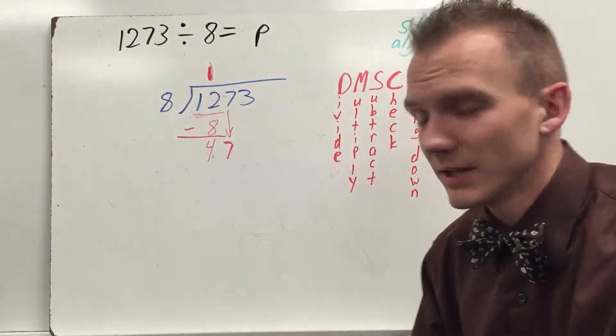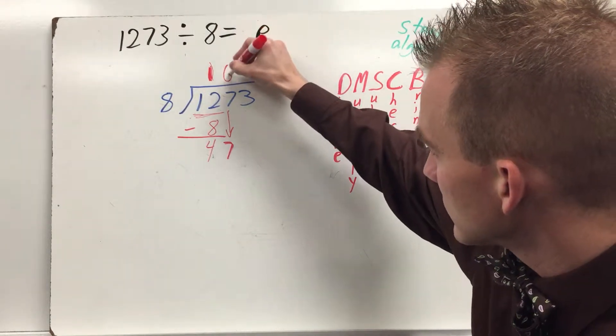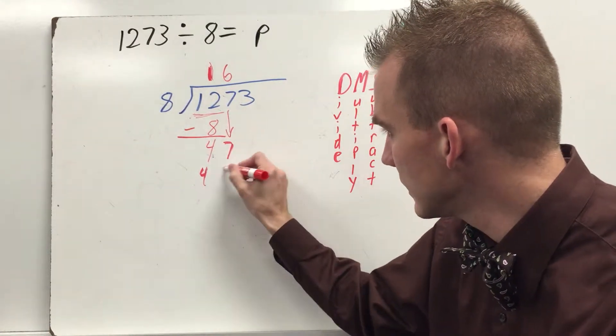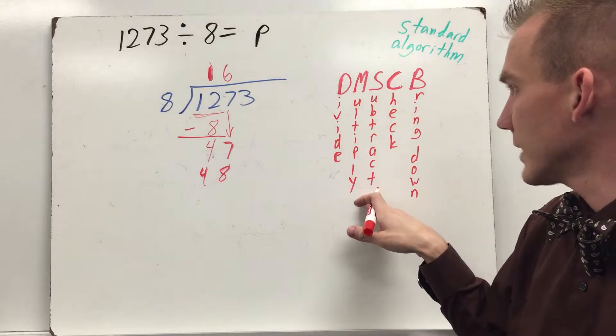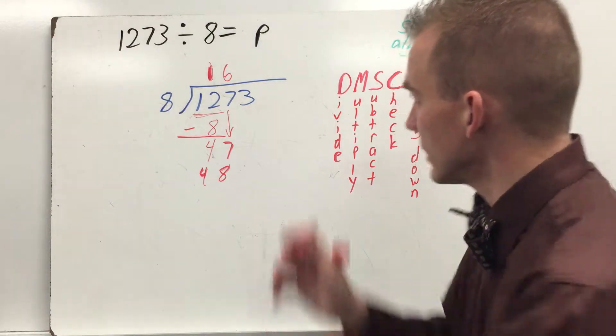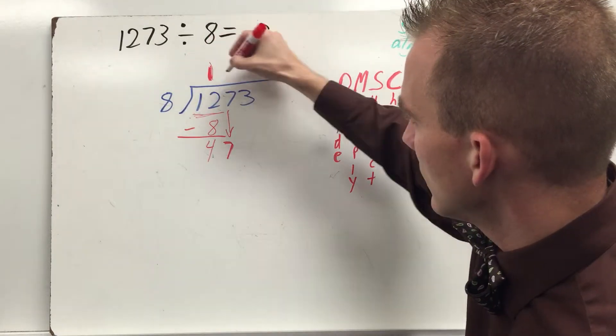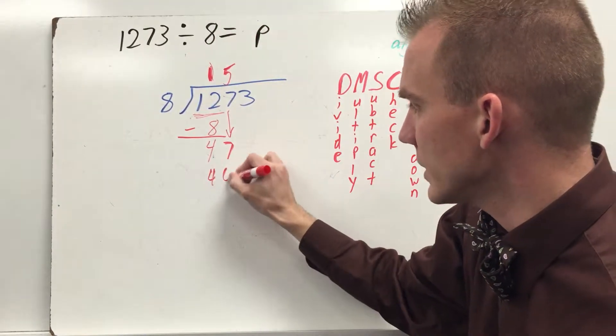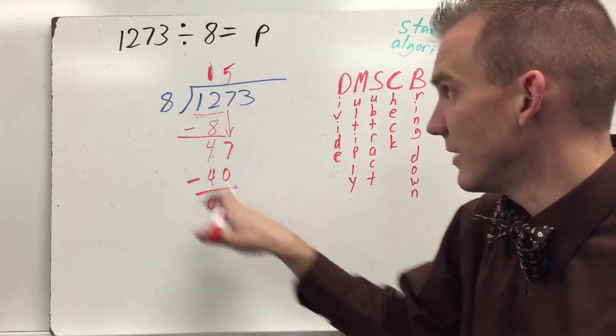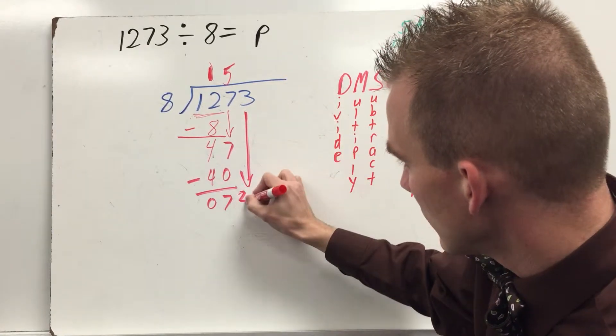All right. So I see 47. And I know that 5 times 8 is 40. So I think 6 times 8. We'll try that. 6 times 8, I know that that is 48. Now I have a problem. I can't subtract. I've divided. I've multiplied. I can't subtract because 47 is smaller than 48. So I know that I have to decrease my division. So I erase and we'll change this to a 5. 5 times 8 is 40. Now I can subtract. 7 minus 0 is 7. 4 minus 4 is 0. Now I can check. 7 is less than 8.